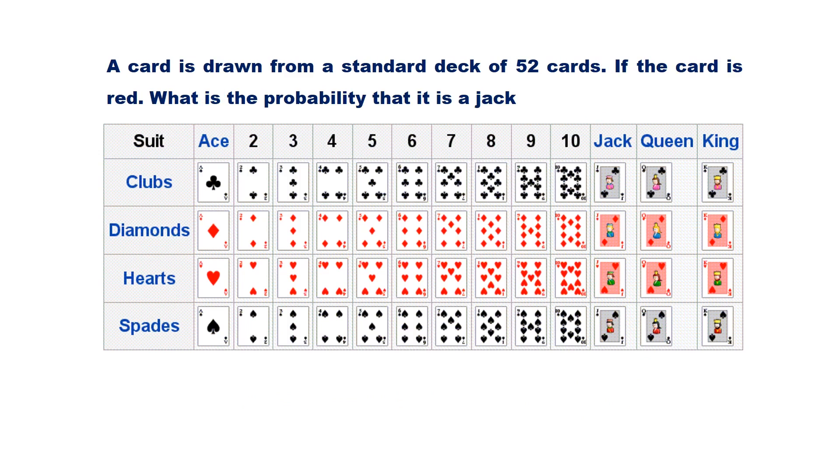What is the probability that it is a Jack if the card is red? Let us use the letter J to represent the event drawing a Jack and R to represent the event the card is red. There are 26 red cards. We have the information that the card is red. Hence, our reduced sample space has only 26 outcomes.